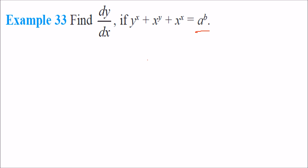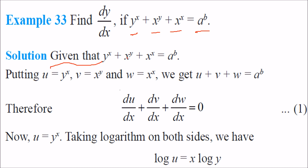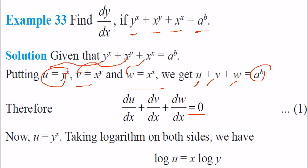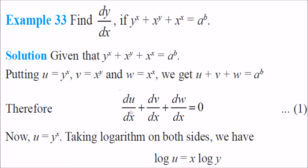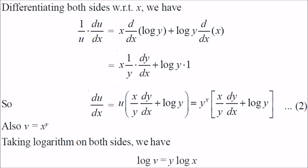Find dy/dx of the function. Here there are three different functions, so we take u = y^x, v = x^y, and w = x^x. Then u + v + w = a^b (a constant), so du/dx + dv/dx + dw/dx = 0. For the first part: u = y^x, so log u = x log y. Differentiating both sides, 1/u · du/dx = x · (1/y) · dy/dx + log y. Therefore du/dx = y^x · (x/y · dy/dx + log y).